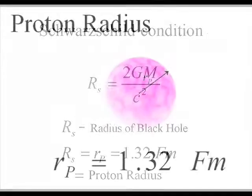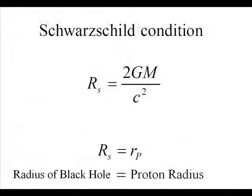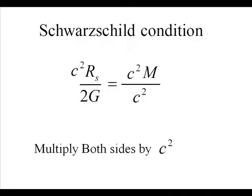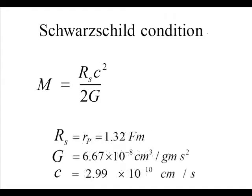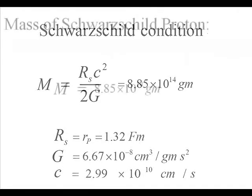The mass needed to obey the Schwarzschild condition for a proton radius of 1.32 femtometers is 8.85 times 10 to the 14th grams.